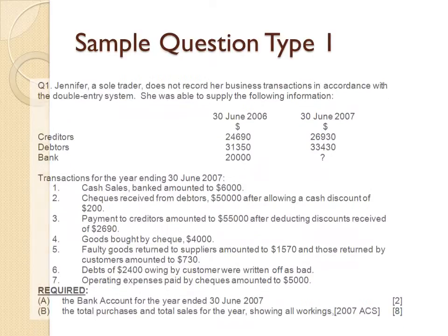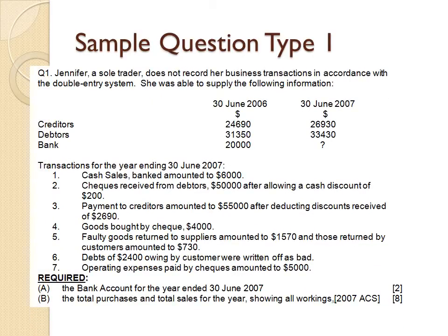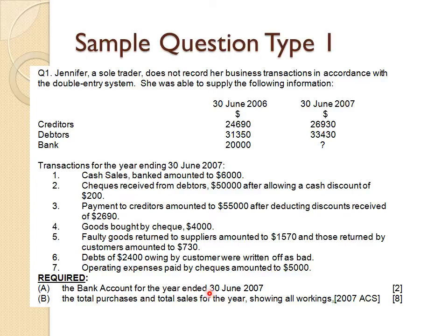Simple Question Type 1: Jennifer, a sole trader, does not record her business transactions in accordance with the double entry system. However, she was able to supply information on creditors, debtors, and bank balances at the start and end of the year, along with transactions during the year. We want to prepare the bank account for the year ended, as well as find total purchases and total sales for the year.